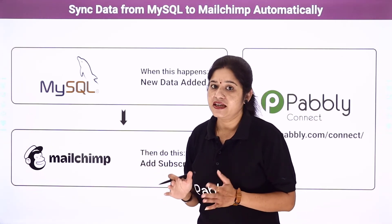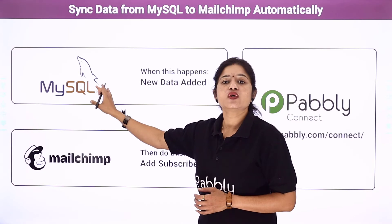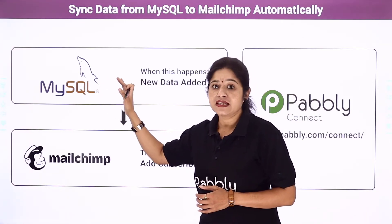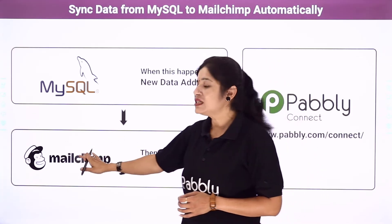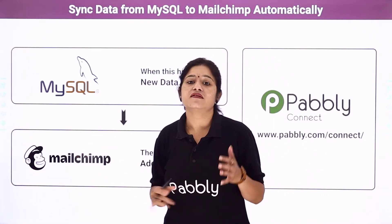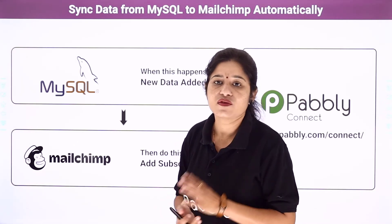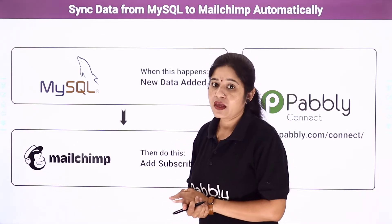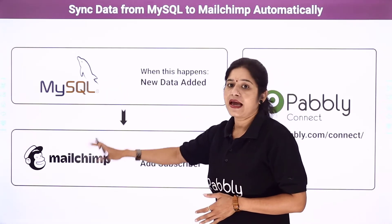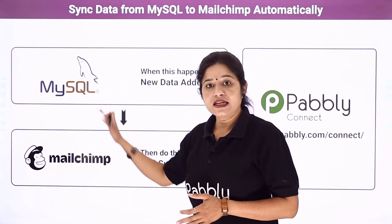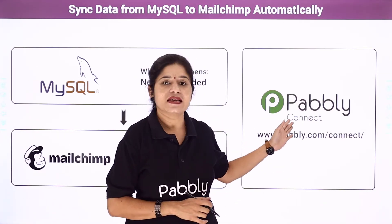Whenever you add the details of a customer into your MySQL database table, automatically the same customer should be added as a new subscriber to your MailChimp subscriber list so that you can send offers and promotional emails to that particular customer as and when required. For this we need to create a connection between MySQL and MailChimp, and we are going to use a software application named Pabbly Connect.